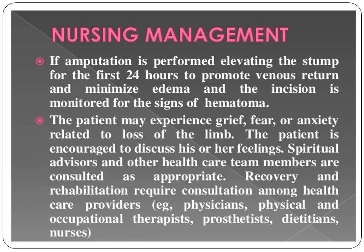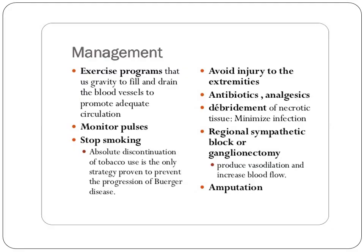Recovery and rehabilitation are very important at that time. You are also trying to educate the patient and the family members about this situation. An occupational therapist helps the person perform activities properly and return to a normal phase of life. The management will also include exercise programs, monitoring the pulses, stopping smoking, avoiding injuries, antibiotics, and analgesics. If amputation is the only choice, you prepare the patient and family psychologically with thorough explanation about what is going to be expected.